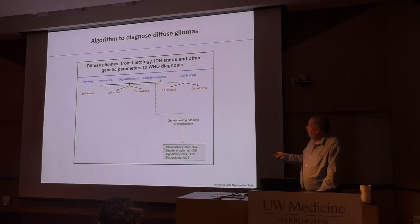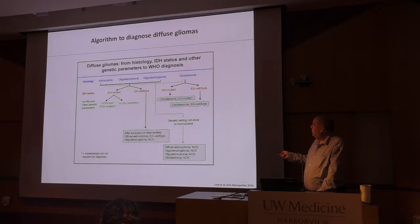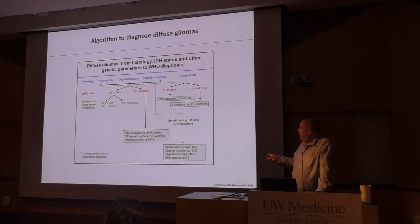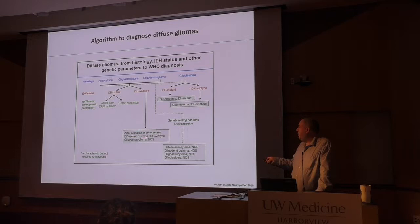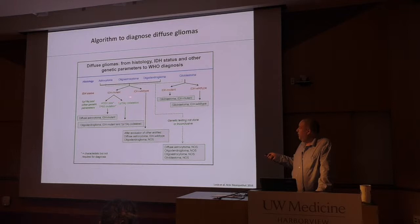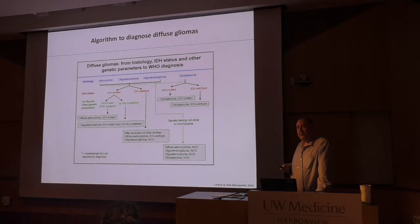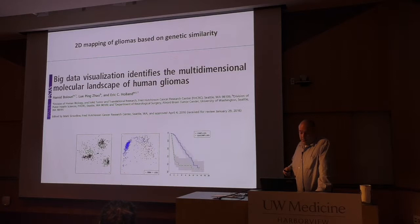For IDH wild-type lower grade glioma, you have to make sure it's not a DNET or ganglioglioma, and you get to either diffuse astrocytoma IDH wild-type or anaplastic astrocytoma. For IDH mutant, that's where we split with 1p/19q co-deletion defining the oligodendrogliomas, and loss of ATRX and TP53 mutations — while not diagnostic — are usually characteristic of IDH mutant astrocytomas, contributing to the diffuse astrocytoma IDH mutant diagnosis.